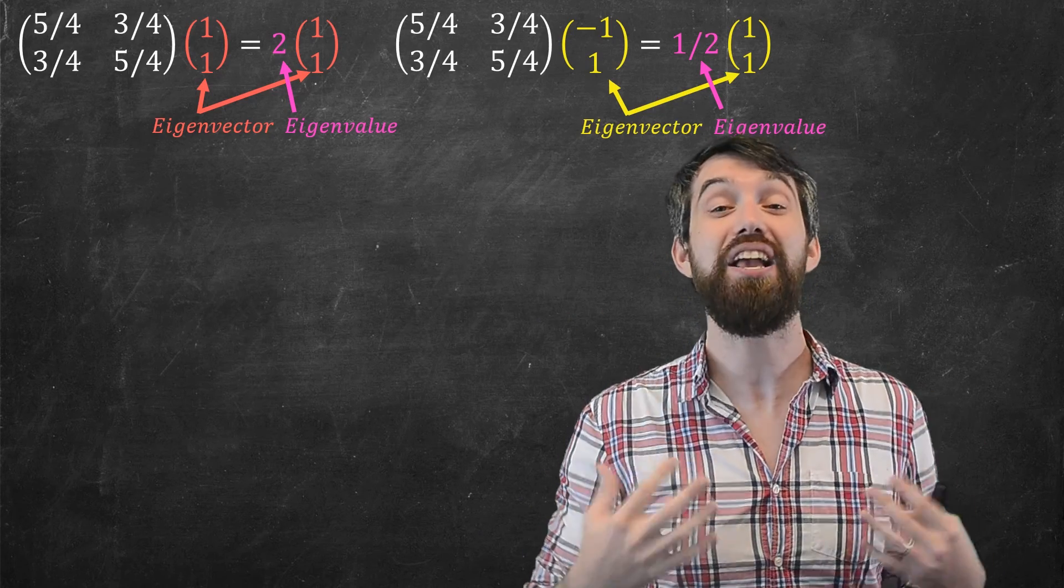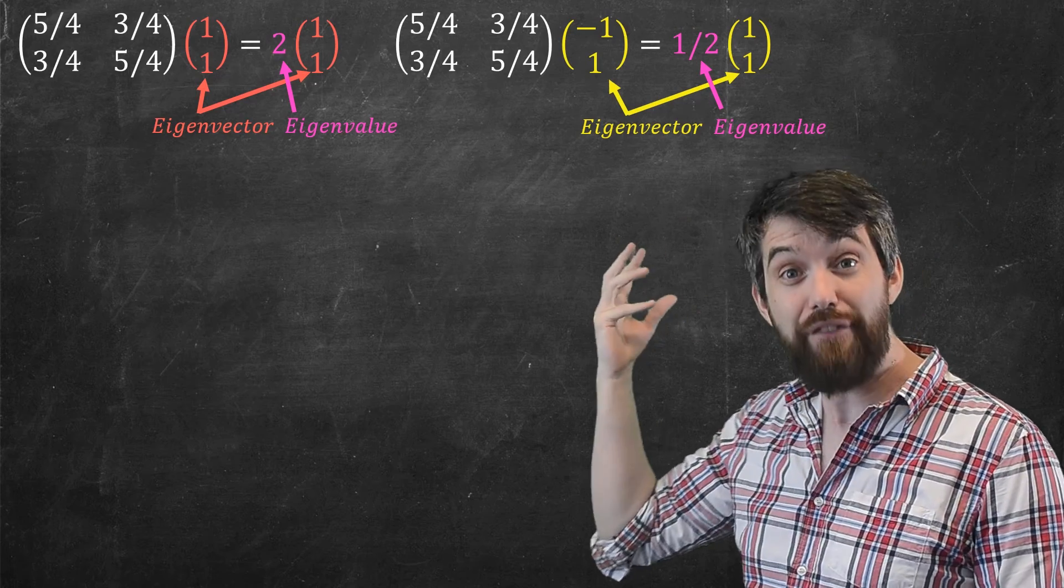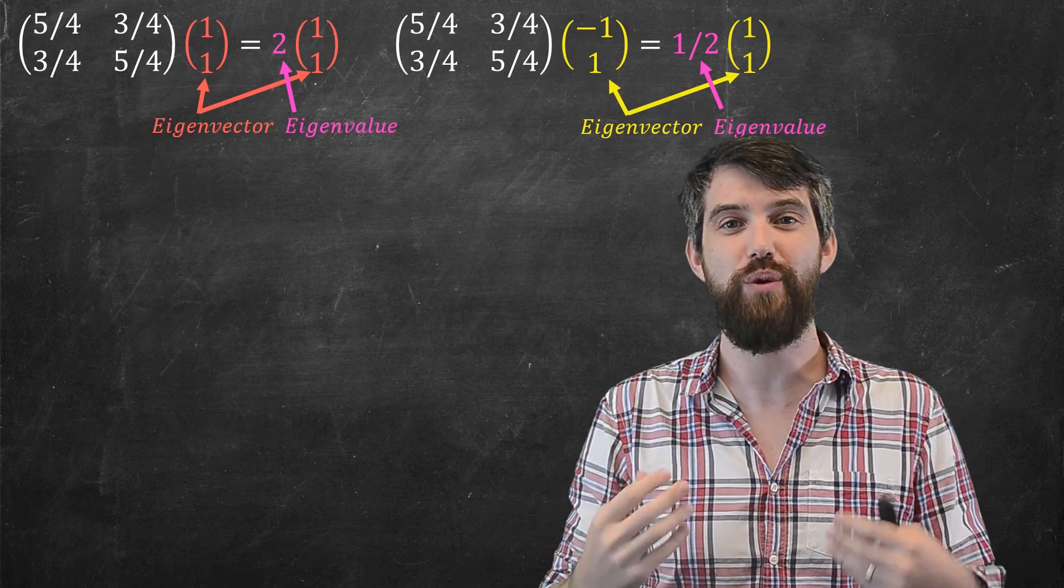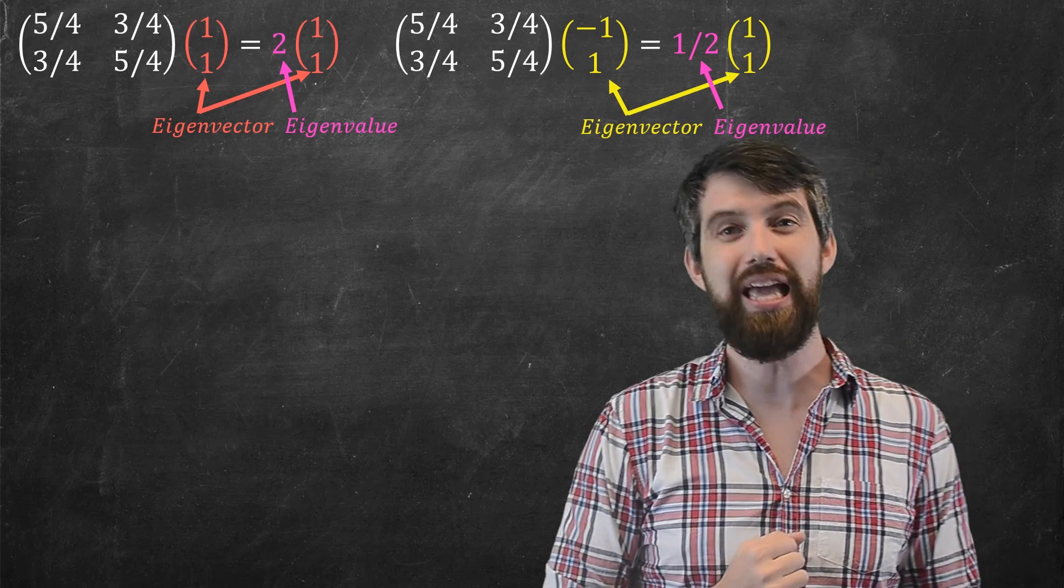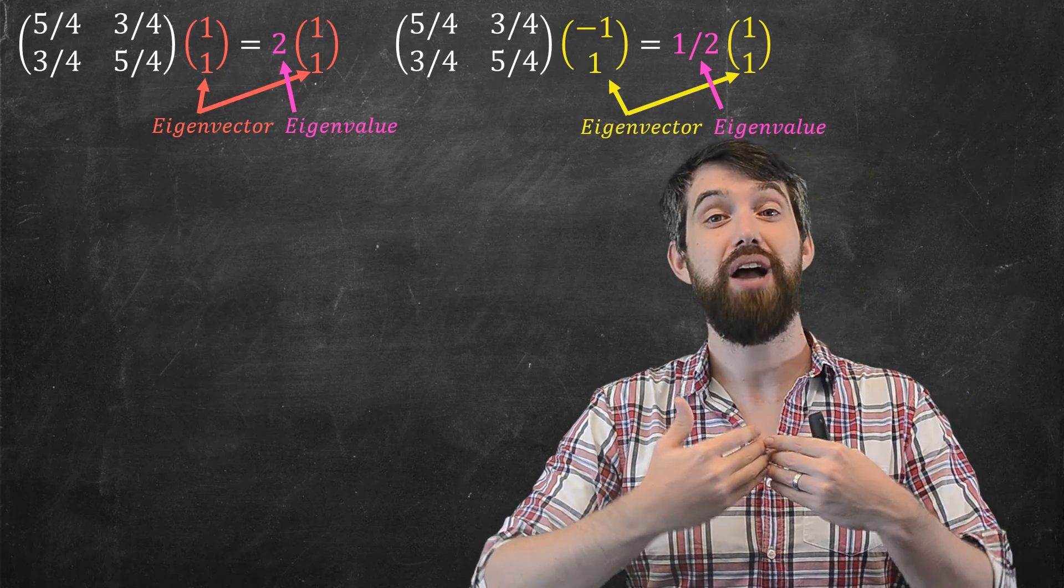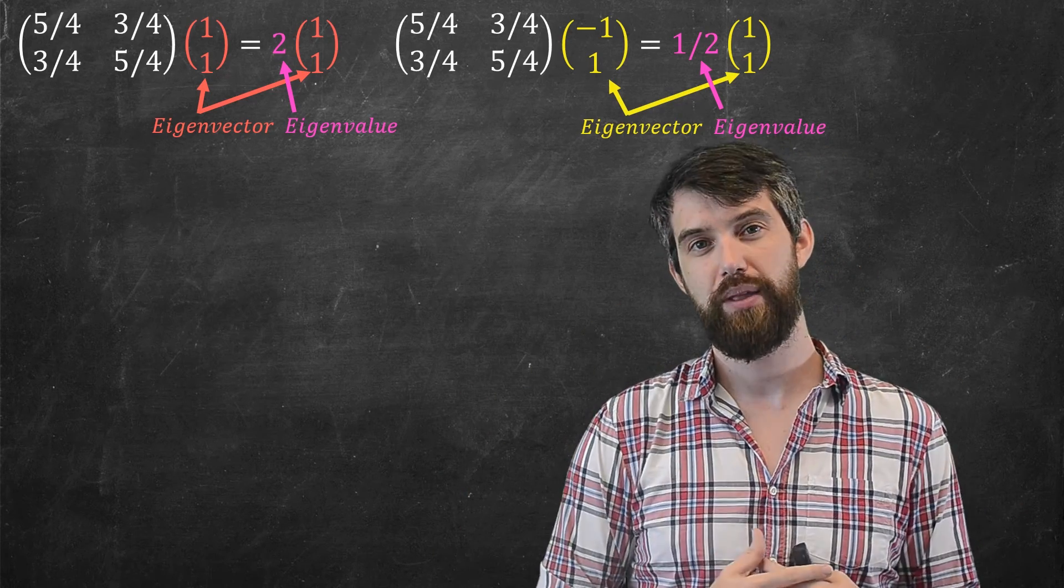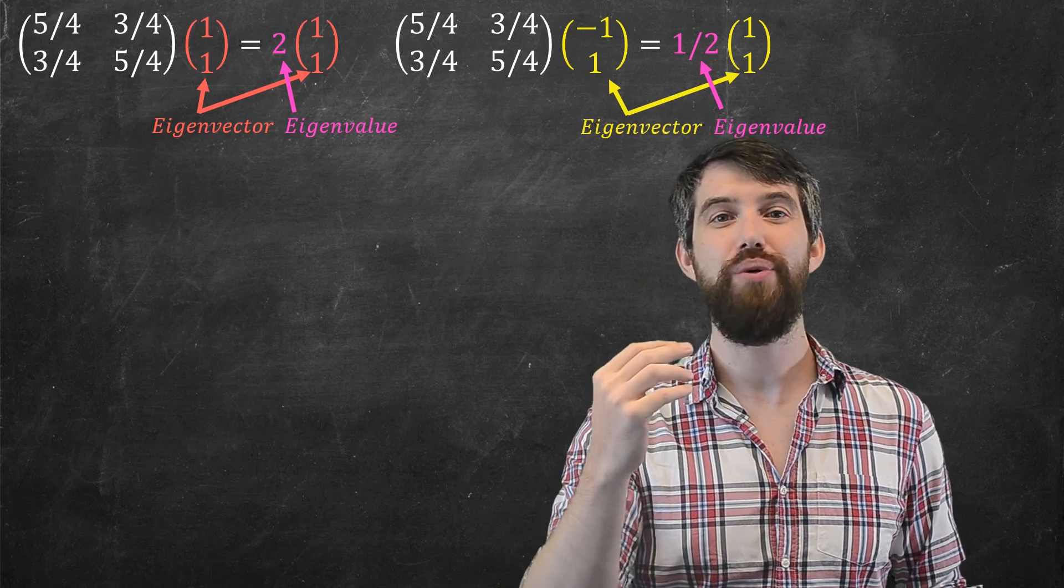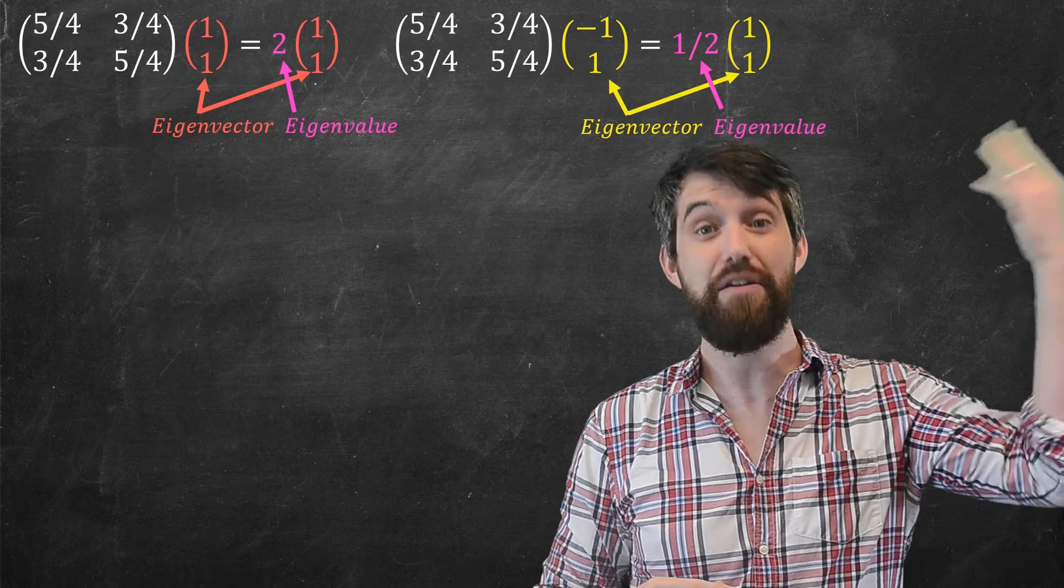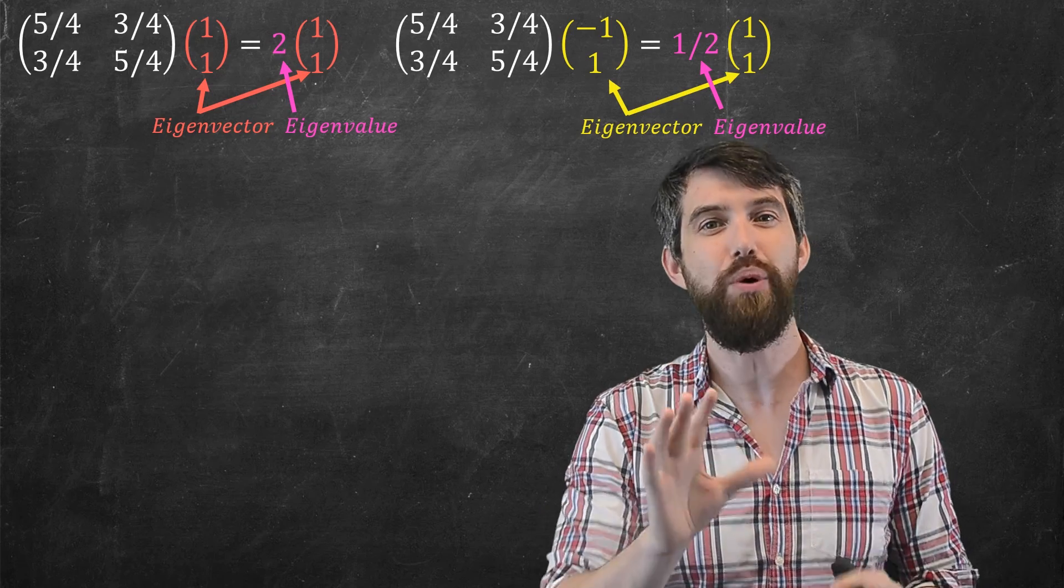And likewise, I've got this eigenvalue, the 1 half, and if I have the corresponding eigenvector minus 1, 1, when I multiply the matrix to it, it just stretches it by a factor of a half. There's this compression. Now, I'm not going to show you how to come up with the eigenvalues and the eigenvectors. Algebraically, I've got a previous video for that.